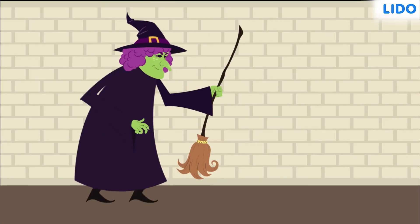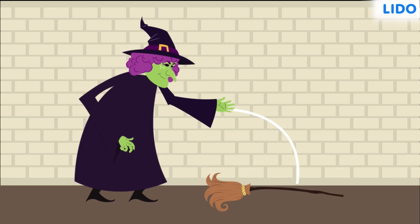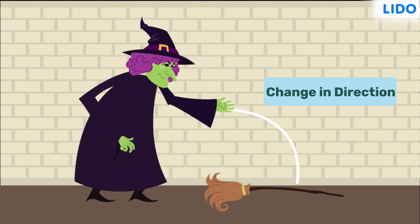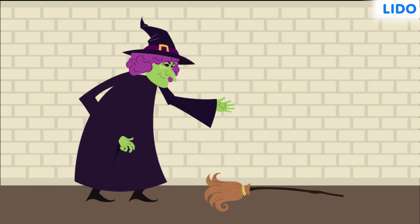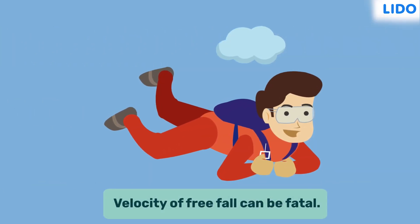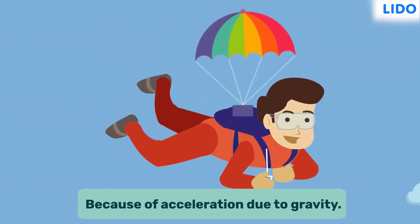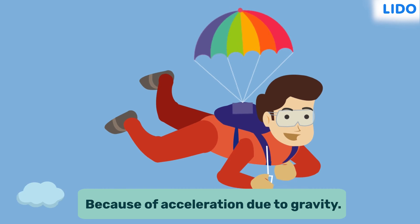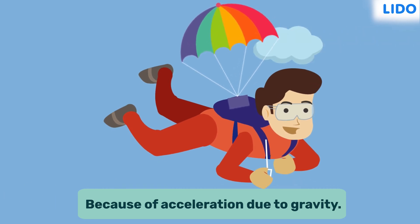What about a falling object? As an object falls, it speeds up. That is a change in speed and therefore a change in direction. So we can say that the object is accelerating. On an interesting note, if falling objects did not accelerate, a parachute would never be invented, right?